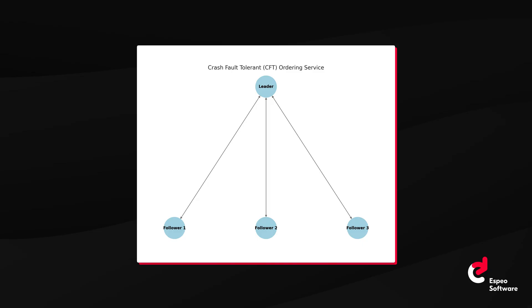In previous versions, consensus was mainly handled by the RAFT protocol, a crash-fault-tolerant mechanism. RAFT assumes all nodes are honest and won't act in bad faith. It's designed to handle failures like crashes or network issues, but doesn't account for nodes that might provide false information intentionally. It operates with a leader node that coordinates transaction ordering — if the leader fails, a new leader is elected from the remaining nodes. RAFT is efficient and works well in environments like corporate networks where all parties are known and trusted, but it doesn't account for dishonest nodes, so in environments where trust cannot be assumed, its assumptions don't hold up.